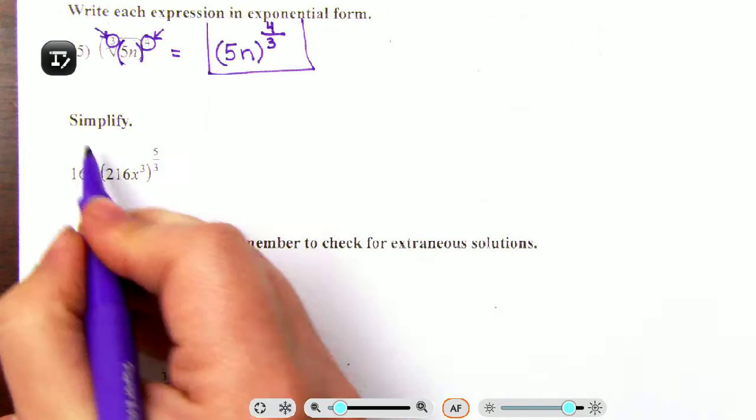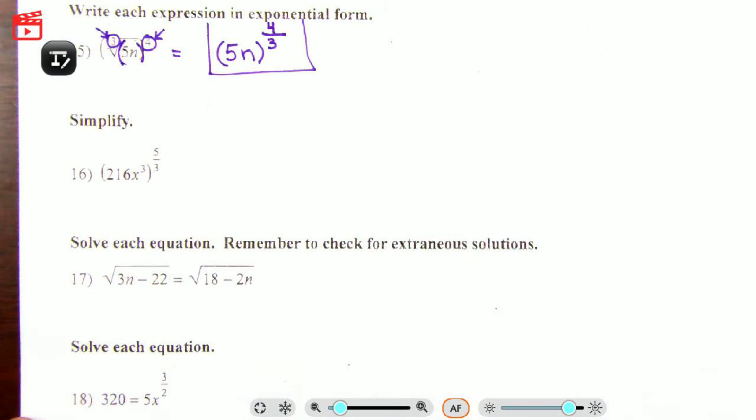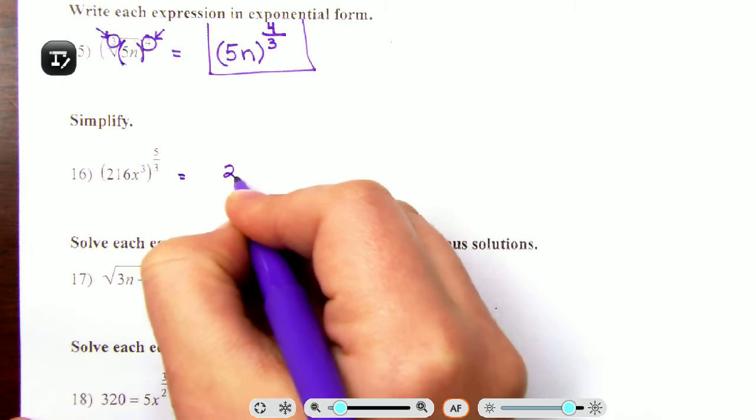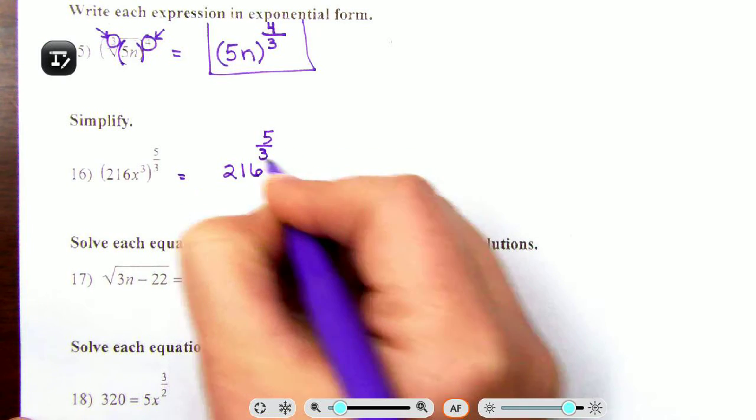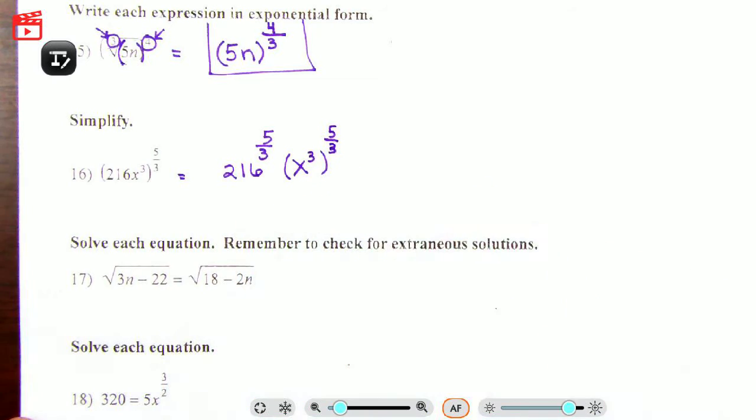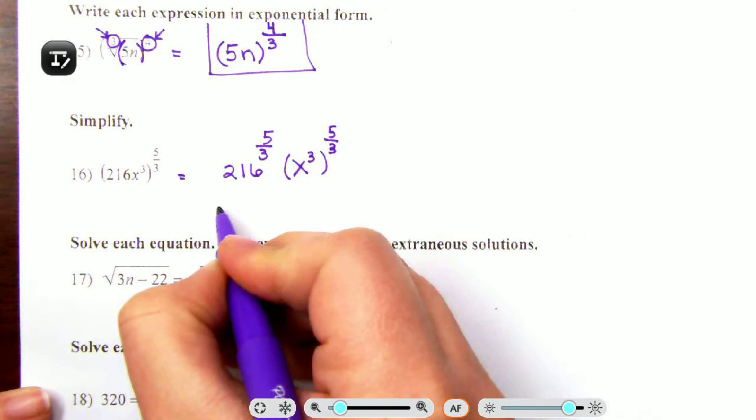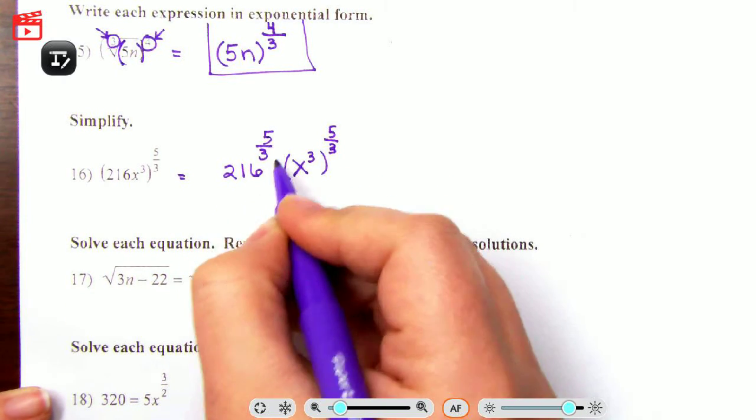Now here's where reading the directions is super important because you can do more with this. You can complicate your life. You don't want to. If it's asking us to write an expression in exponential form, here's an exponent. That's the form, and you're done with that one.